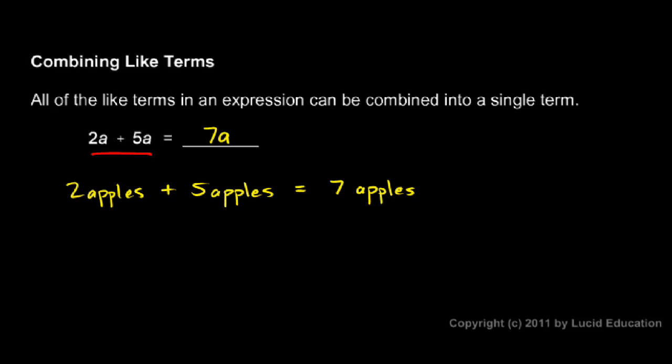Now instead of apples, just think a. What this means is that 2 of anything plus 5 of that same thing gives you 7 of those things. And we can combine them because they are the same thing. We can't combine them if they're different types of things.